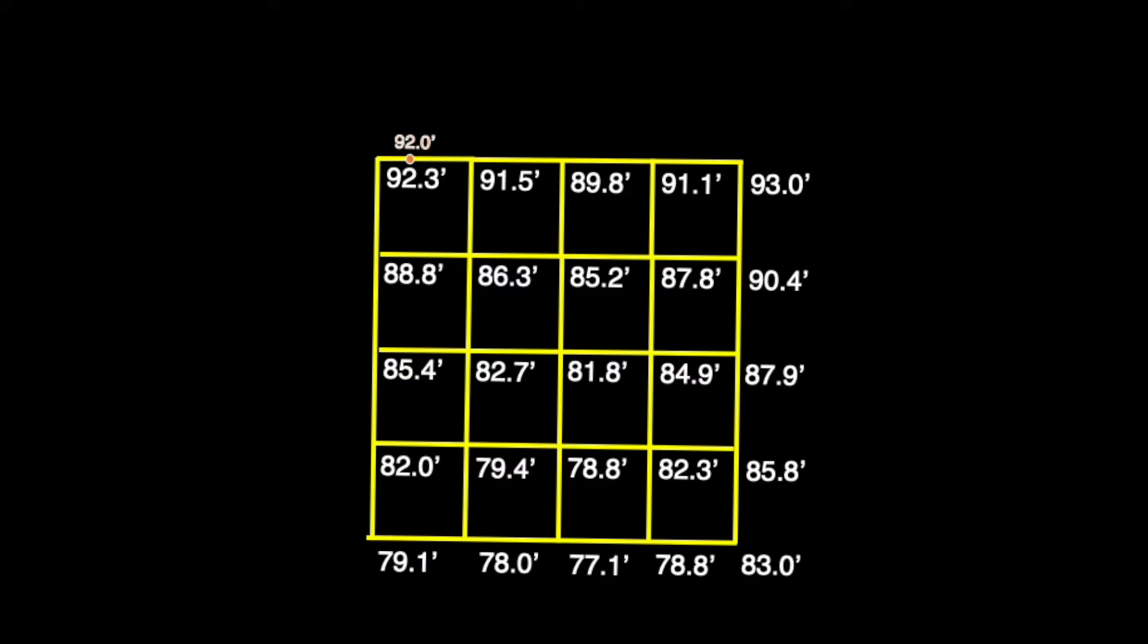After identifying the two elevation points on the segment of line in question, we go back to our 92.3 foot mark and subtract 88.8 feet. This produces an answer of 3.5 remaining